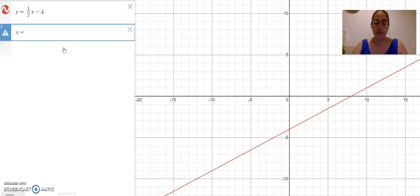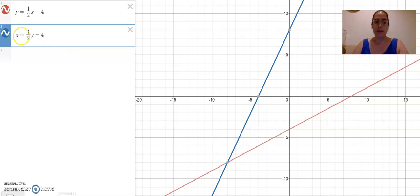x equals one-half y minus 4. Now you've noticed that this second function that we've just created pops up on your screen here as a blue line. Just a moment to let that sink in.